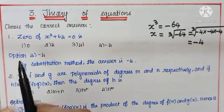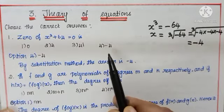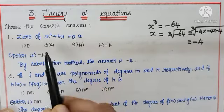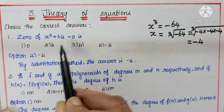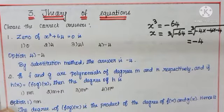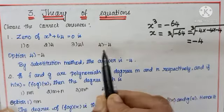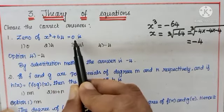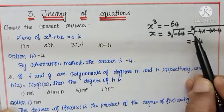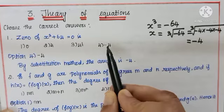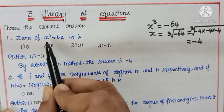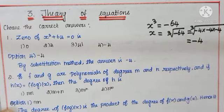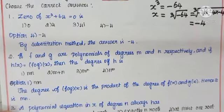The other method: since four answers are given, just substitute wherever x appears. Put 0 — not satisfied. Put 4 — not satisfied. Put 4i — not satisfied. When I put -4, it is (-4)³ - 64 + 64 = 0. So one way is to directly solve, or just substitute each value and check. The correct option is 4 and the answer is -4.